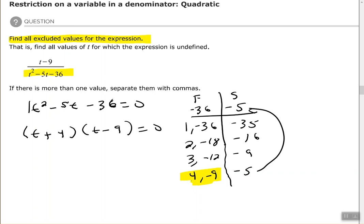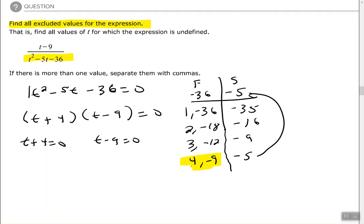Take each factor, set them equal to zero, solve each one of the equations. So subtract 4, add 9. So my excluded values are negative 4 and positive 9.